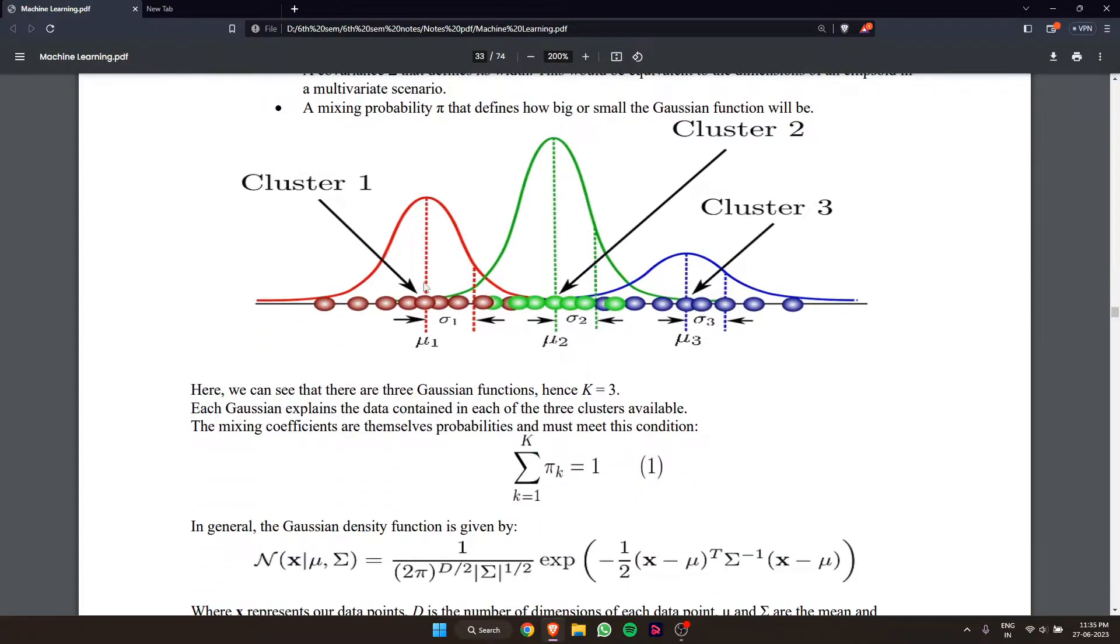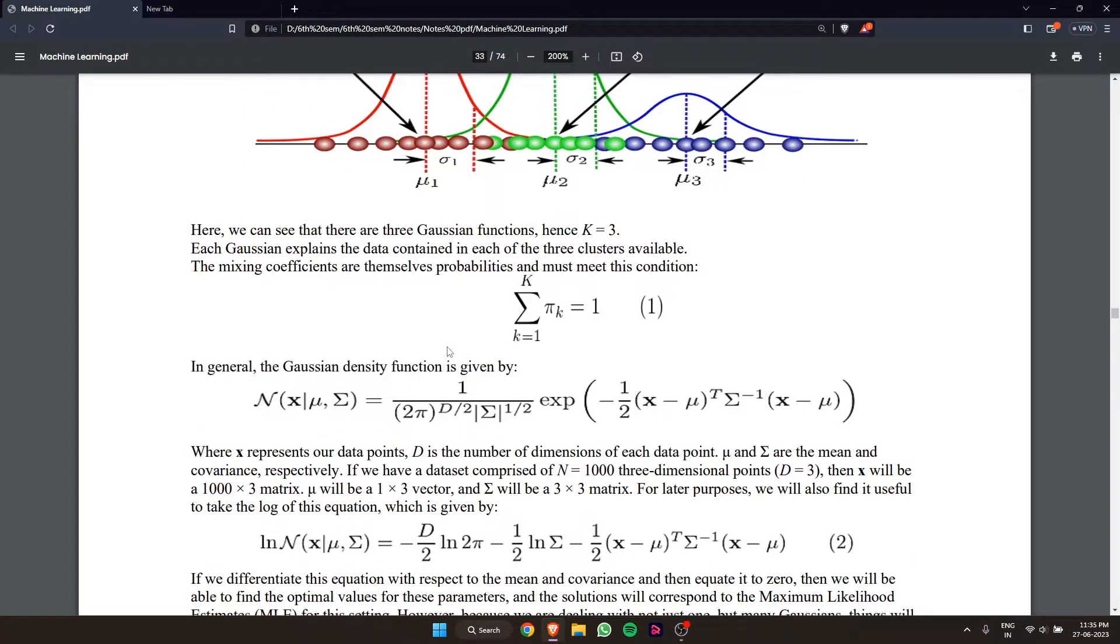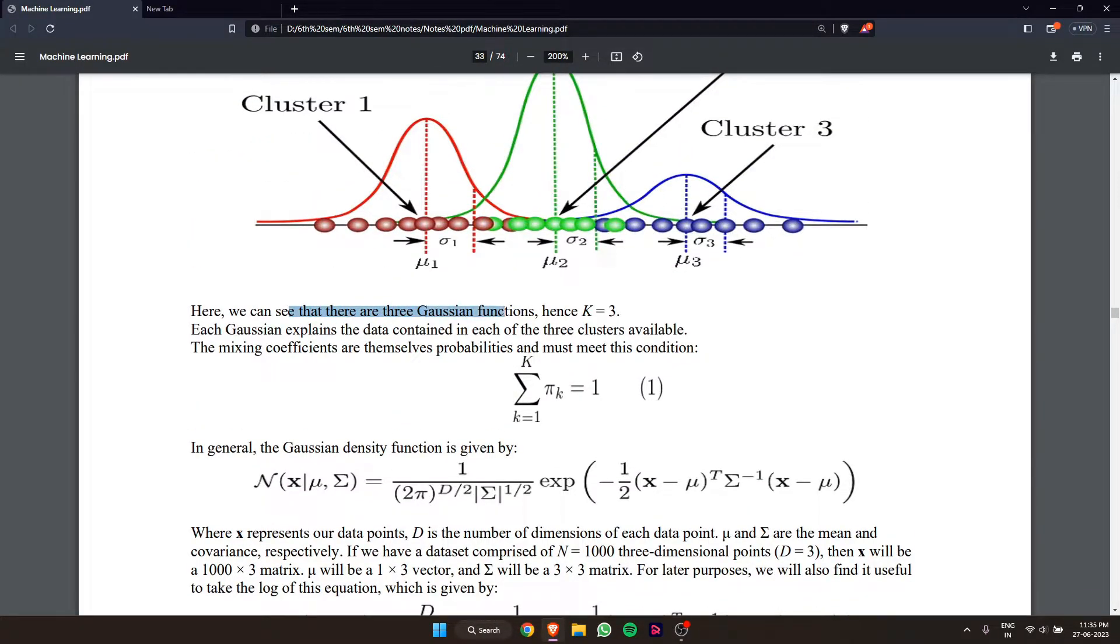Here we can see that there are three Gaussian functions, hence K equals 3. This means we create three clusters.